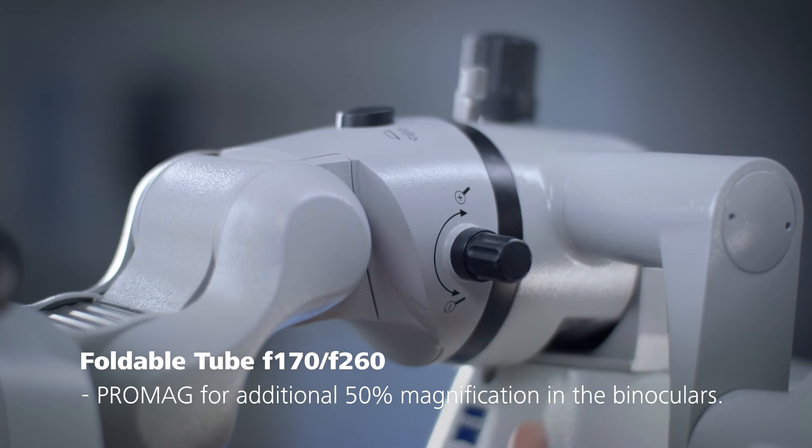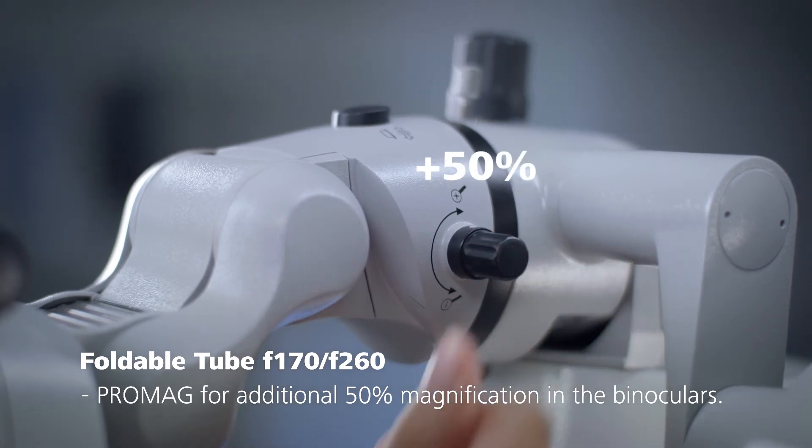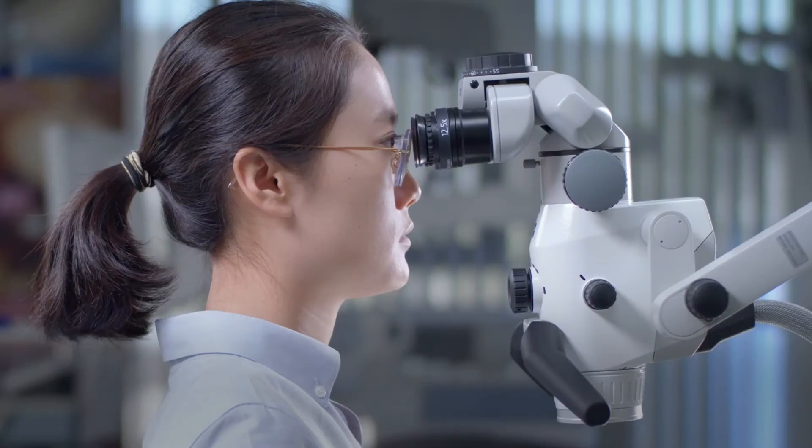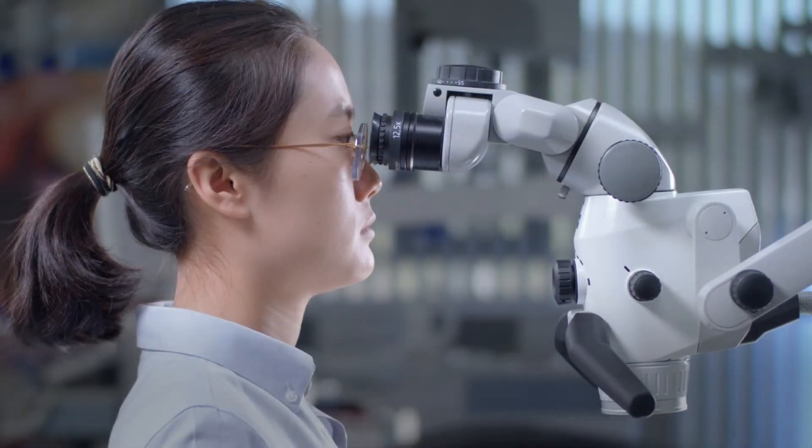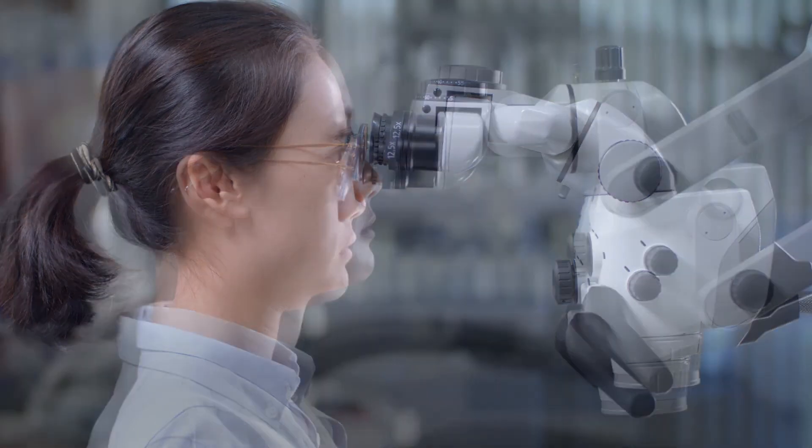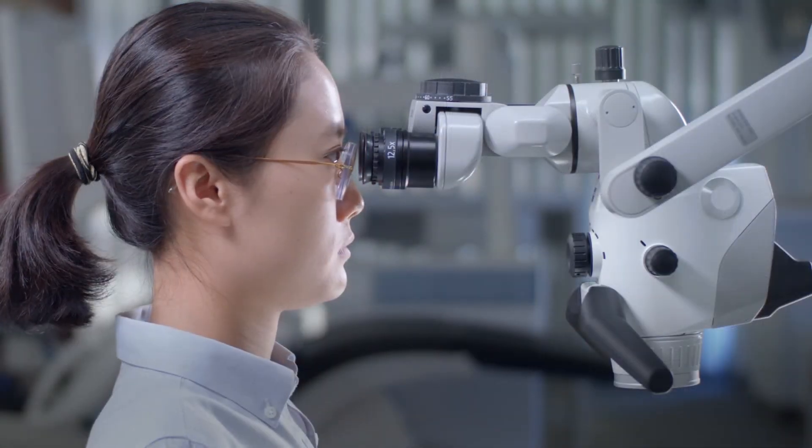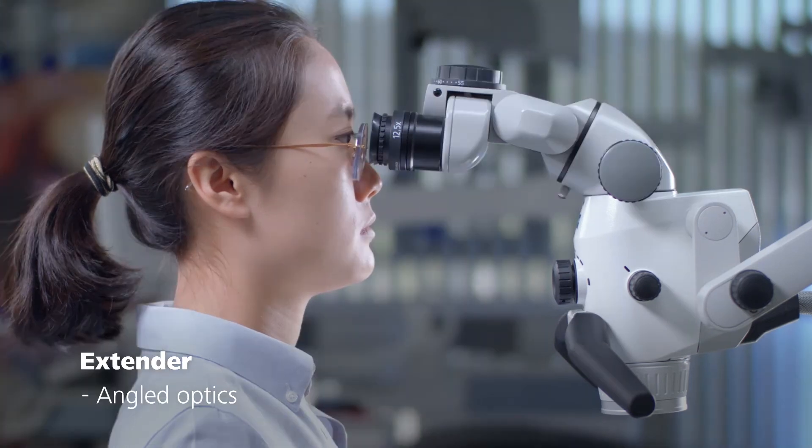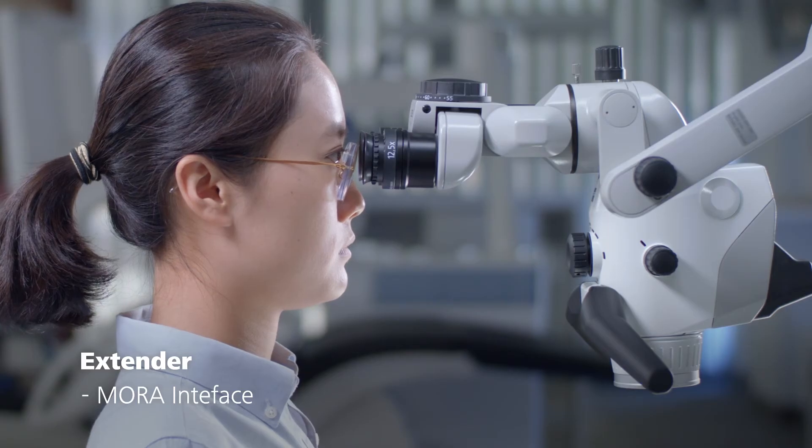The integrated PROMAG function provides additional 50% magnification in the binoculars. There are times when you might need additional space between yourself and the microscope. That's why Zeiss offers three kinds of extenders: a beam splitter, angled optics, and a MORA interface.